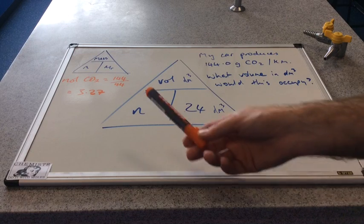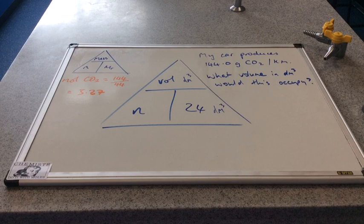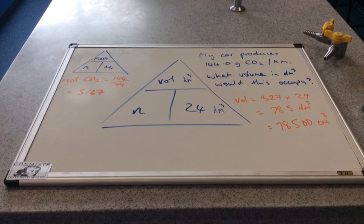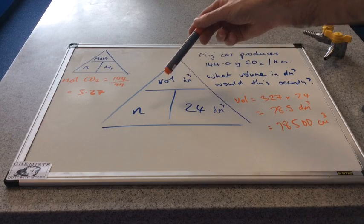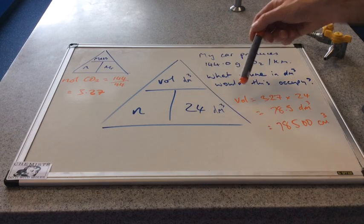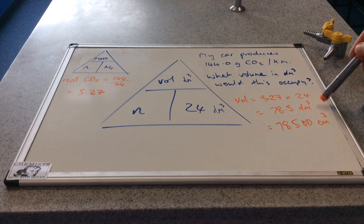So that's going to feed into this triangle now, and we're going to work out what that volume would be in decimeters cubed. So to convert that to volume, we feed in the number of moles and we multiply by 24. You can see that there. And that comes out at 78.5 cubic decimeters to three significant figures.